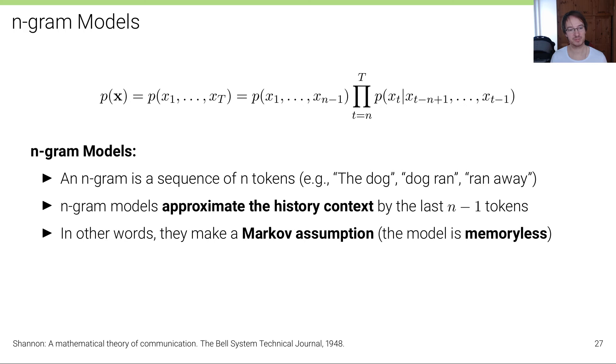We use n-grams to denote both sequence of tokens but we'll also use n-grams to denote the probability table - the conditional probability of a word given n minus one previous words. That is n-gram models, which are also probability tables, but now they approximate the history context by the last n minus one tokens.